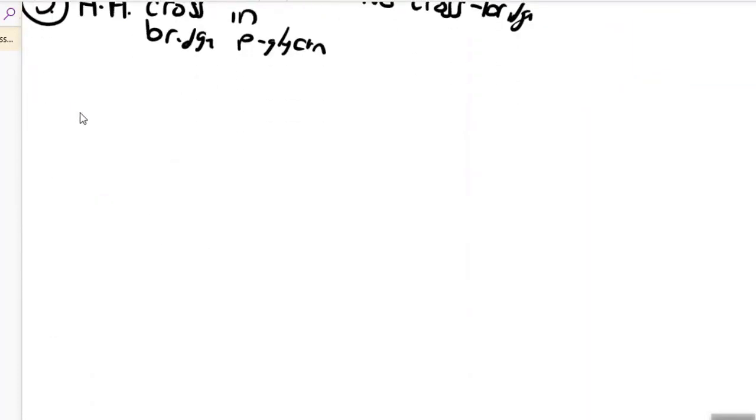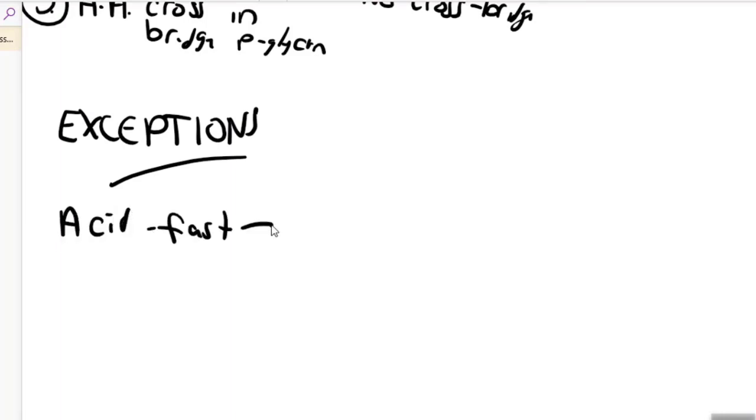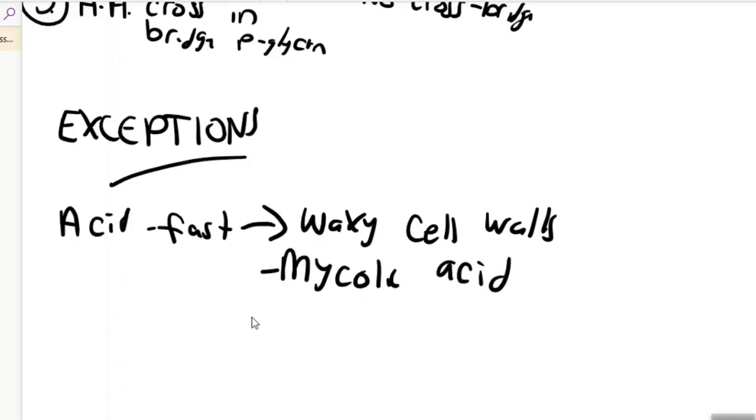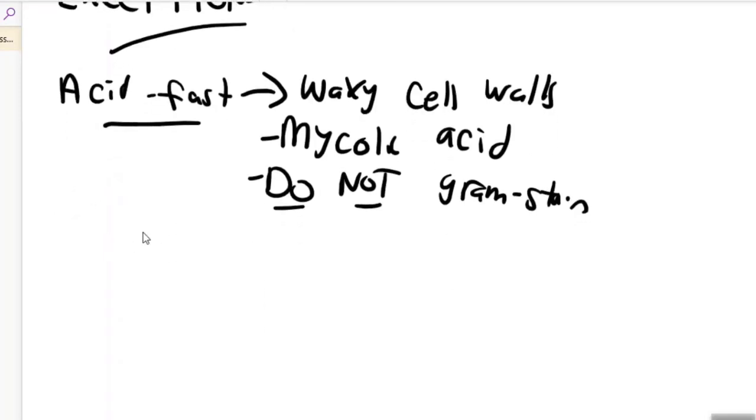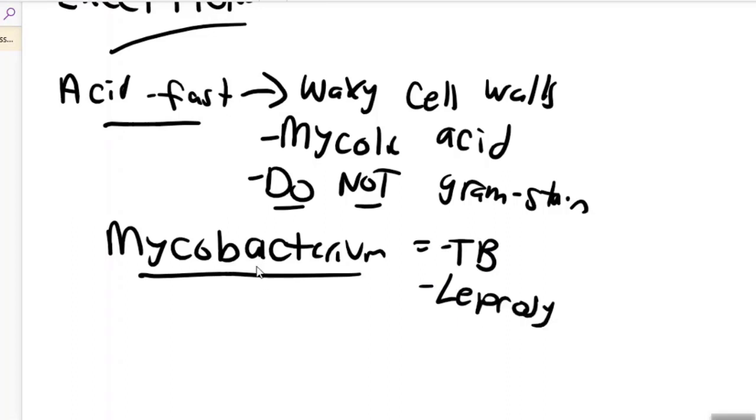The last thing I want to mention are a couple of exceptions, these weird oddballs. The first are called acid-fast bacteria. These bacteria have very waxy cell walls, they're waxy because they contain a material called mycolic acid. Therefore, these bacteria do not gram stain accurately. Instead, we'll do what's called the acid-fast stain. This is important medically because, for example, anything in the mycobacterium are acid-fast. Mycobacterium cause a couple of important diseases such as tuberculosis and also leprosy. We would typically do an acid-fast stain for this genre of bacteria.